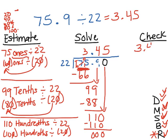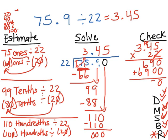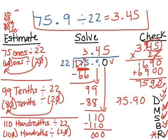So I would do 3 and 45 hundredths times 22. 2 times 5 is 10. 2 times 4 is 8 plus 1 is 9. 2 times 3 is 6. Cross out the 2. I'm done with it. Now this 2 is really a 20. So I need to put down that 0 as a placeholder. 2 times 5 is 10. 2 times 4 is 8 plus 1 is 9. 2 times 3 is 6. Add it together. Now how many numbers are after the decimal? Two numbers. That means I need to move my decimal to places. 75 and 90 hundredths, which is the same as my dividend. So 75 and 9 tenths divided by 22 equals 3 and 45 hundredths.